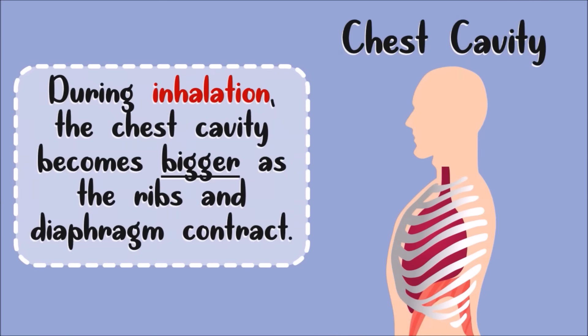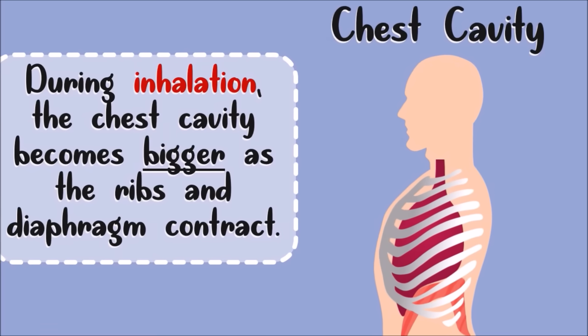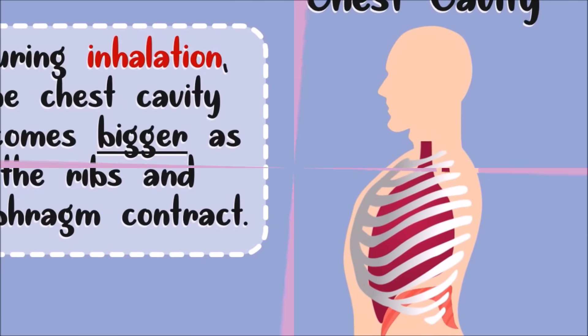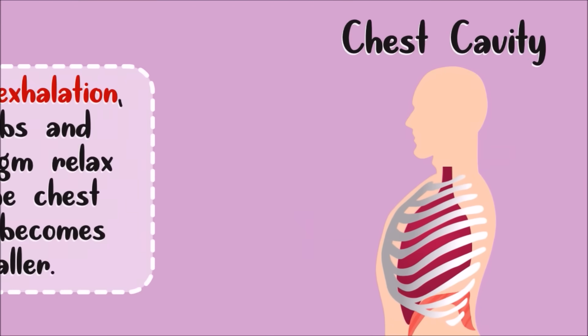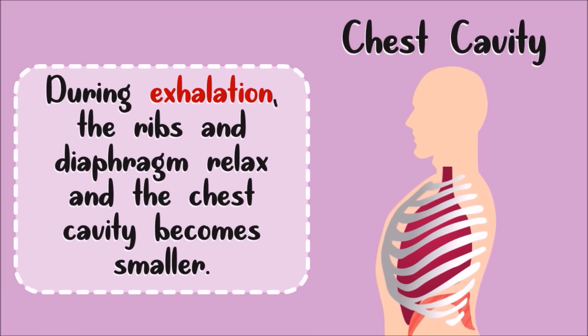The ribs and the chest cavity also move during respiration. During inhalation, the chest cavity becomes bigger as the ribs and diaphragm contract. During exhalation, the ribs and diaphragm relax and the chest cavity becomes smaller.